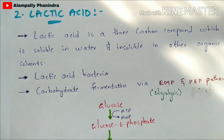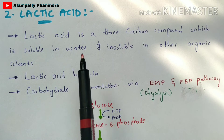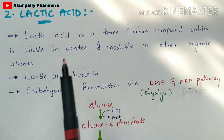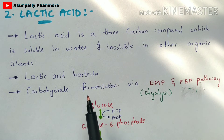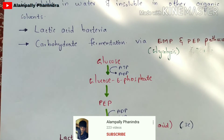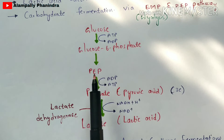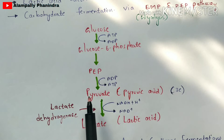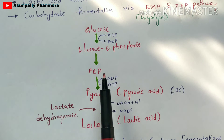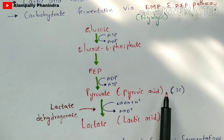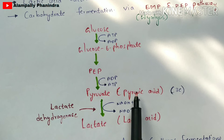Now let us discuss the production of lactic acid. Lactic acid is a three-carbon compound that is soluble in water and insoluble in other organic solvents. It can be produced by lactic acid bacteria using a technique called carbohydrate fermentation. Looking at the EMP pathway — also called glycolysis — glucose is converted into glucose-6-phosphate, which is converted into phosphoenolpyruvate, which is then converted into pyruvate, also called pyruvic acid. The glycolysis pathway ends here, and pyruvic acid is a three-carbon compound.